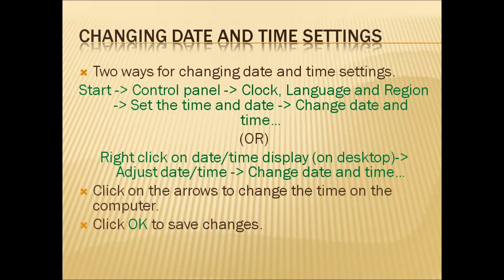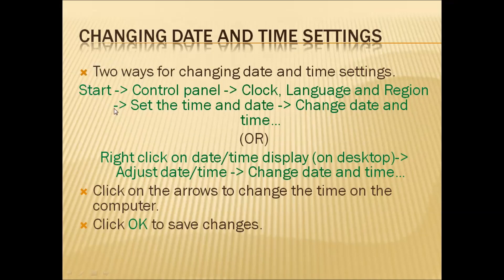Now we will learn how to change the date and time in your system. There are two ways. First: go to Start, click on control panel, then click on 'Clock, Language and Region', then go to 'Set the time and date', then 'Change date and time'. After going there, you click on the arrows to change the time on the computer, then click OK to save changes.